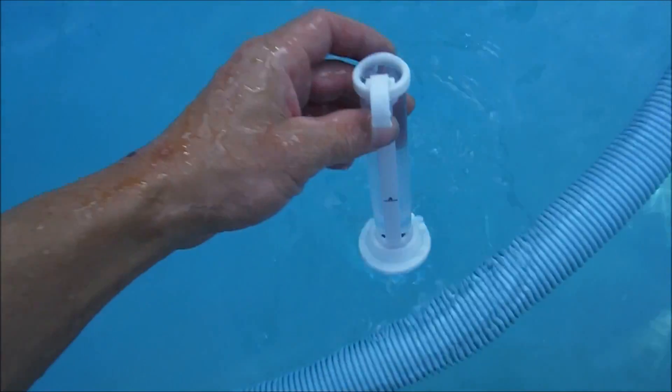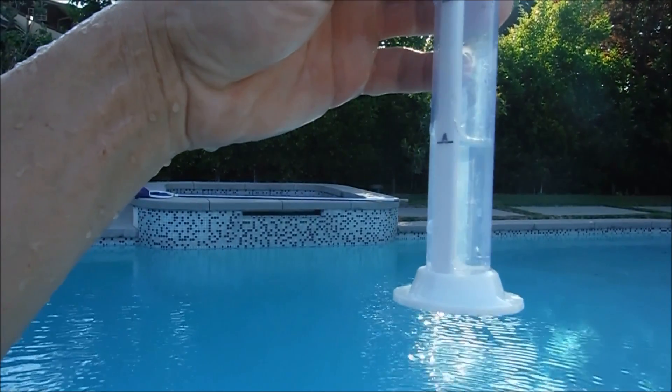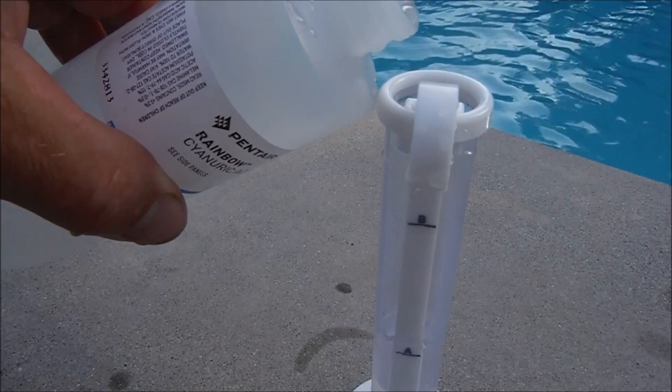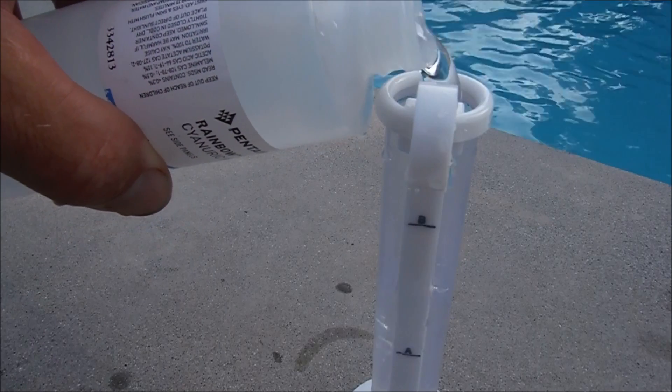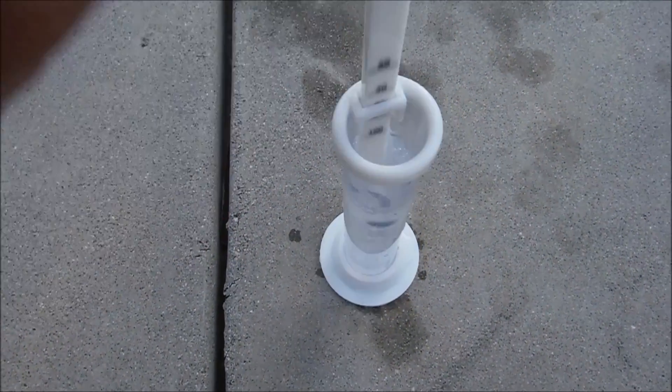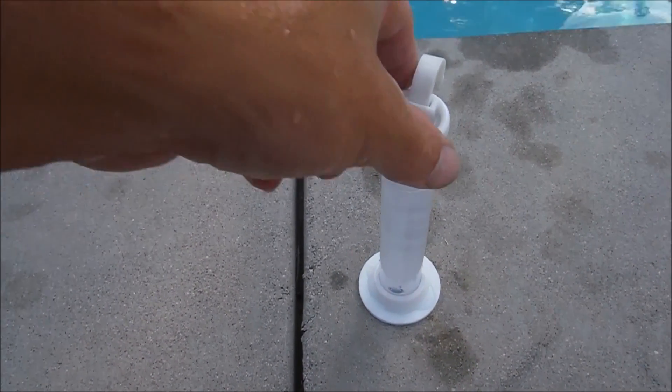You're going to fill up to line A. You want to hold it at eye level and make sure that it's right there at line A. I'm going to add the solution to line B. And then you want to use this and you want to stir it up about 10 or 12 times. And we're going to wait two minutes and we're going to go ahead and do the test.